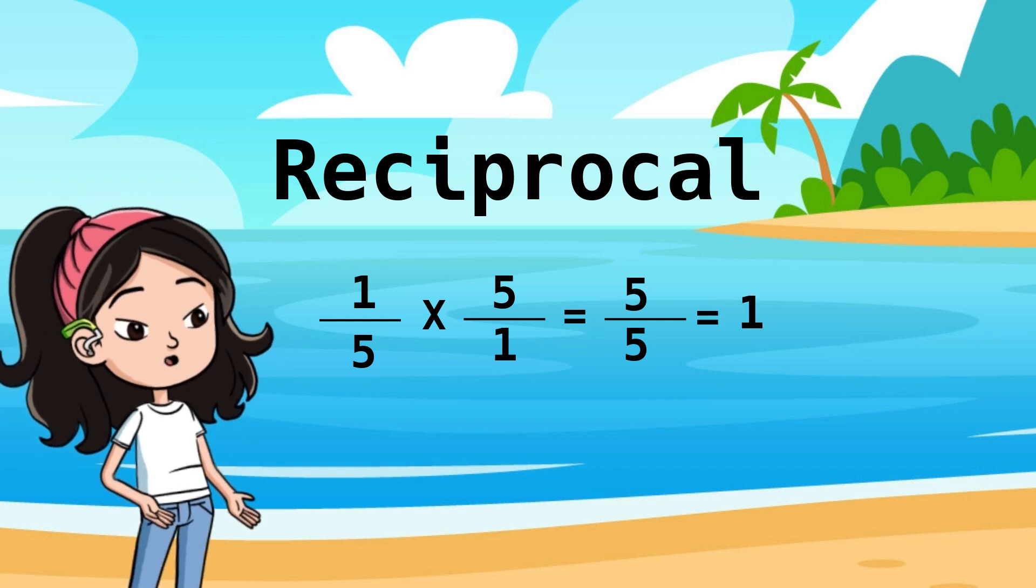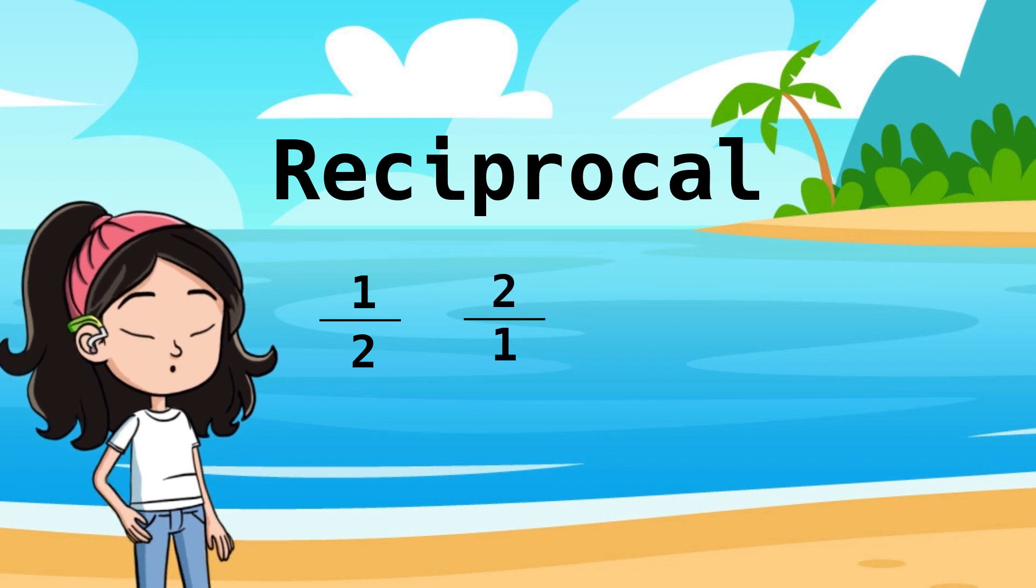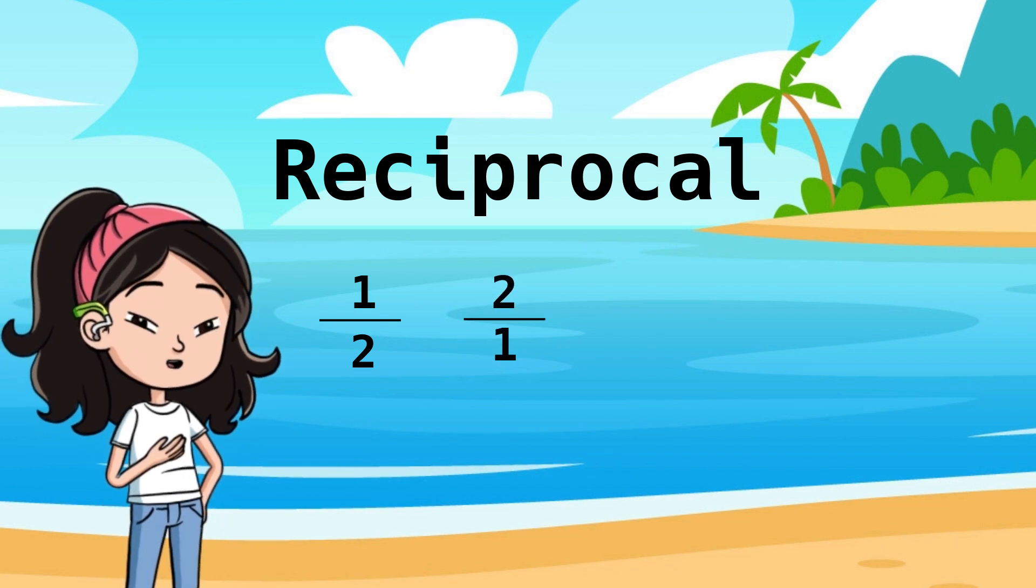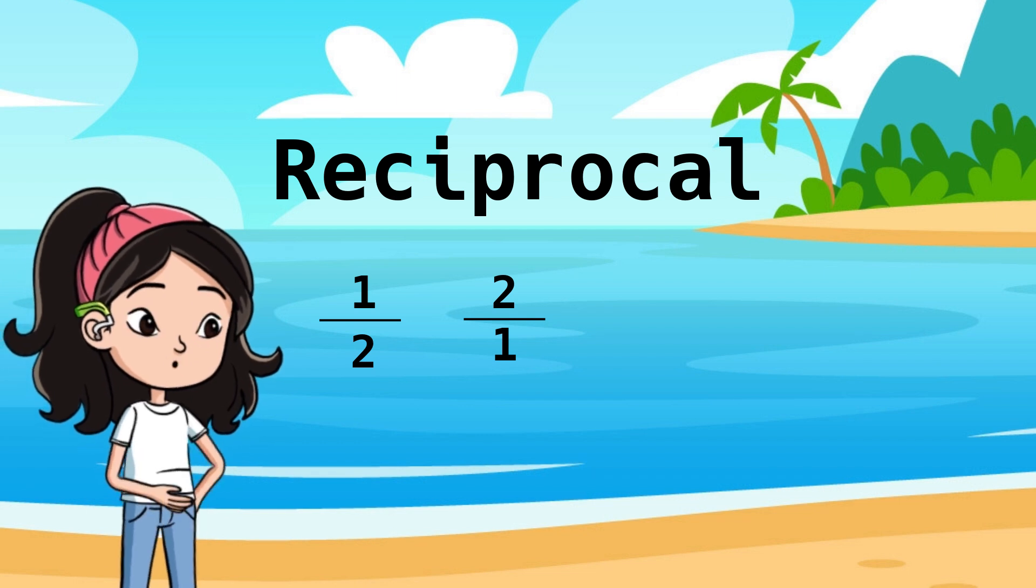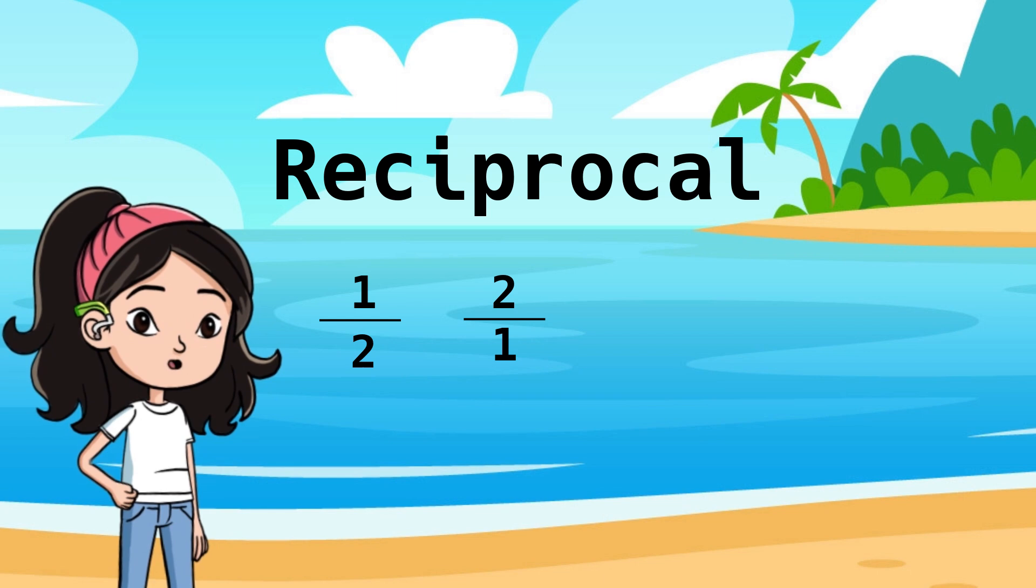Let's look at another example. The reciprocal of 1 half is 2 over 1, and the reciprocal of 2 over 1 is 1 half. If we multiply both fractions, the product will be 1.